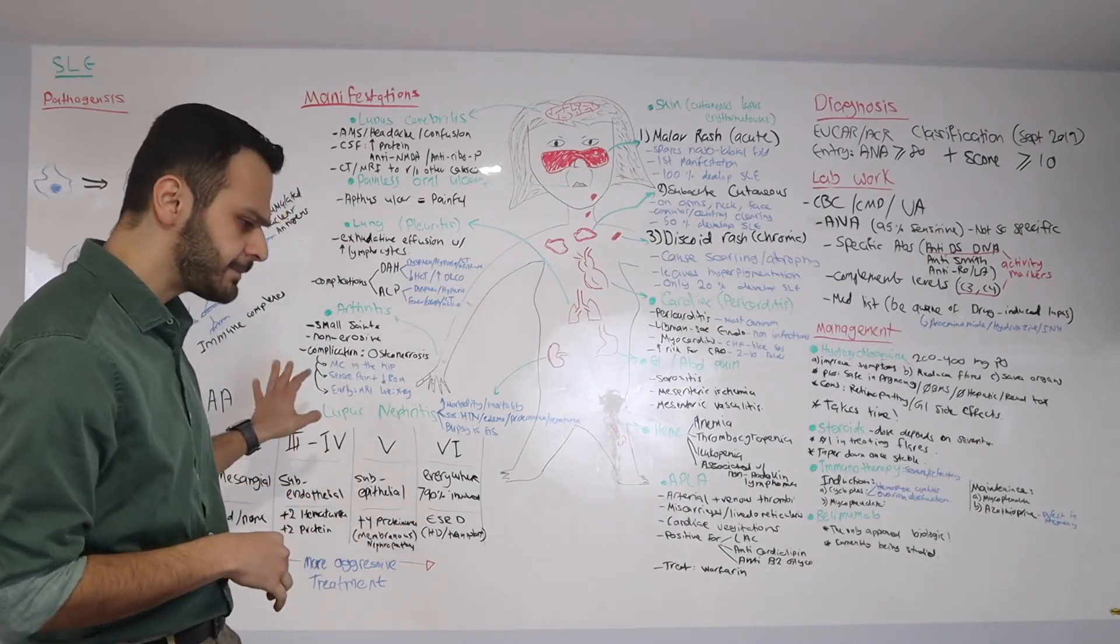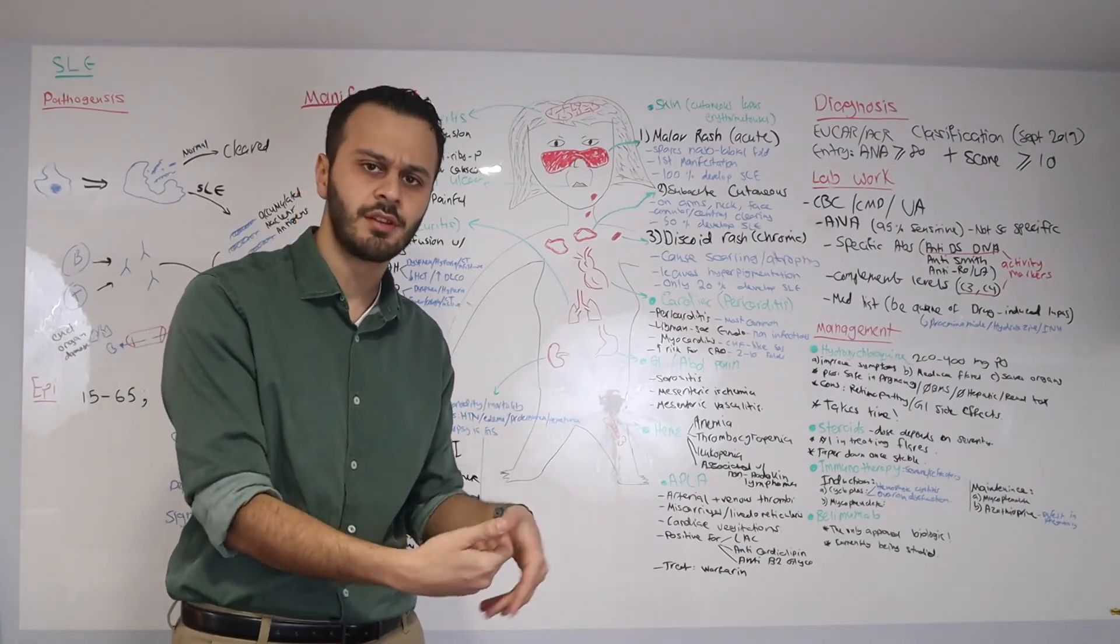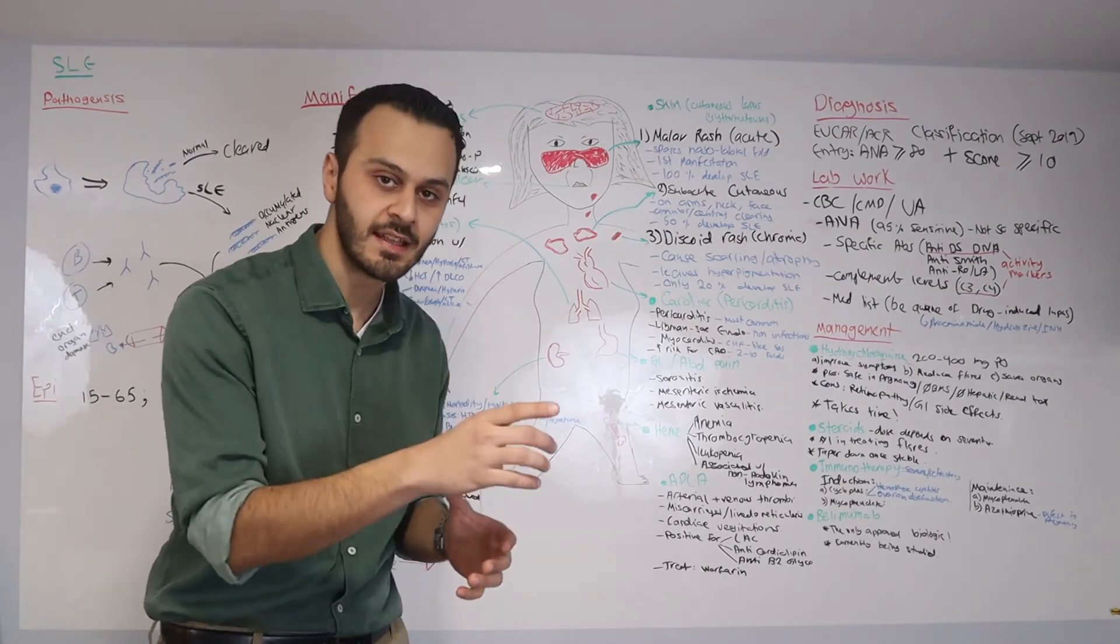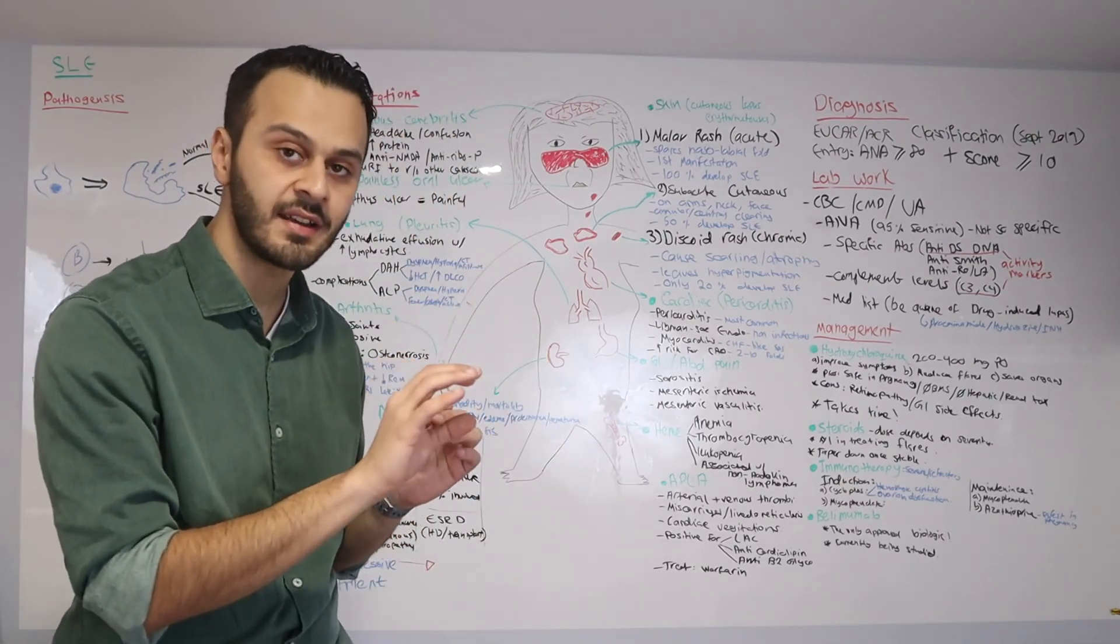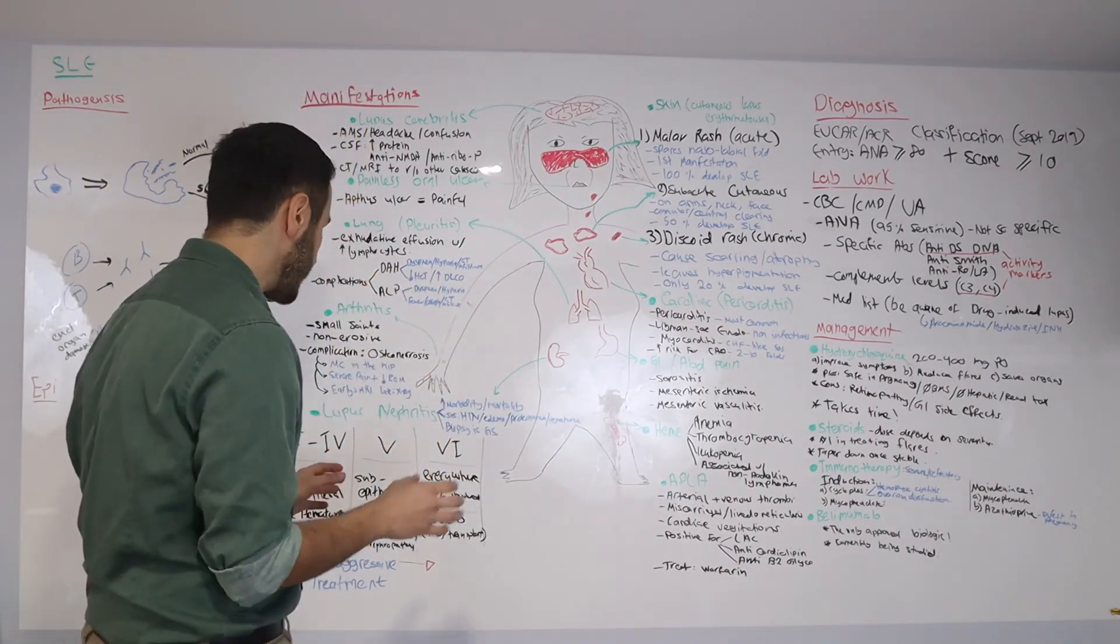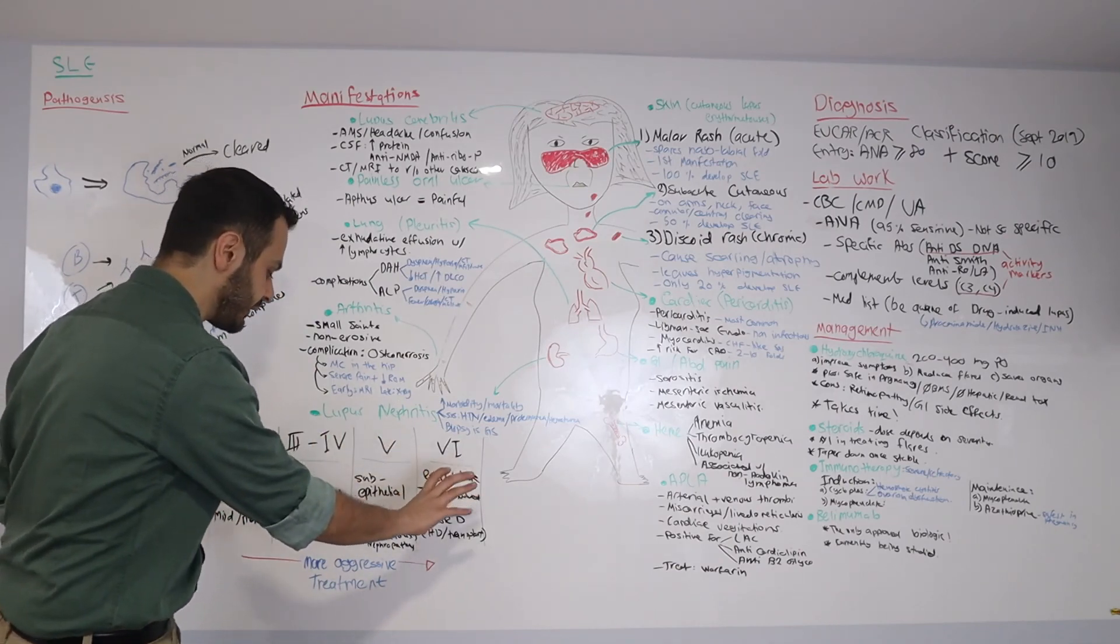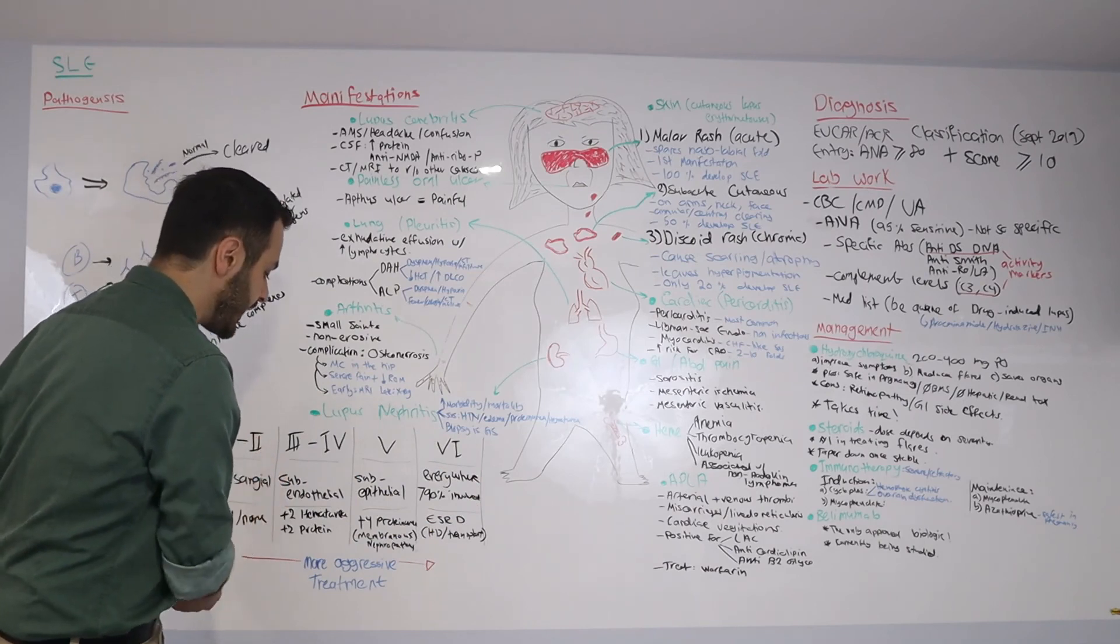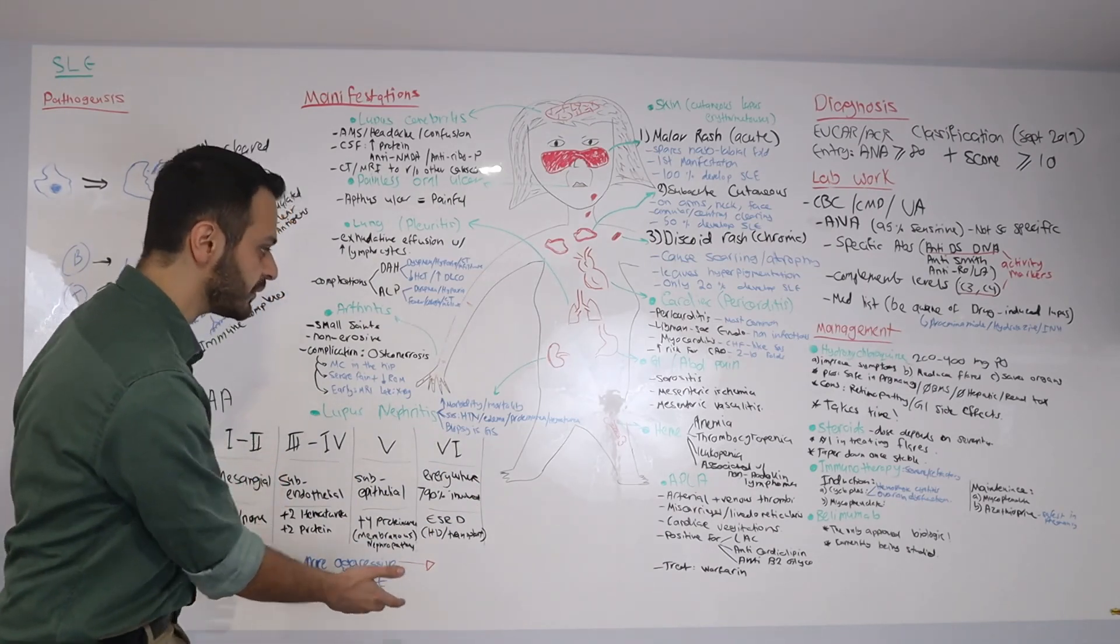When you suspect lupus nephritis with the urine analysis and you see proteinuria and hematuria, it is not enough for you to say these findings are secondary to lupus nephritis until you get the biopsy. Biopsy will also help you stage that lupus nephritis, know where you are in terms of the classes, and based on that, it will tell you how aggressive you want to be in terms of treatment.